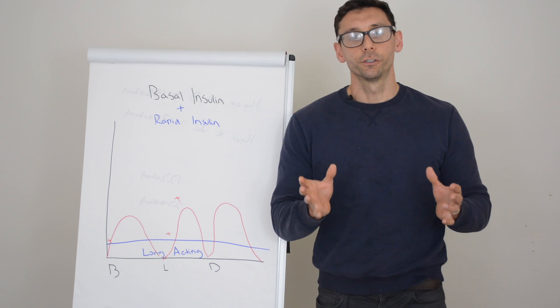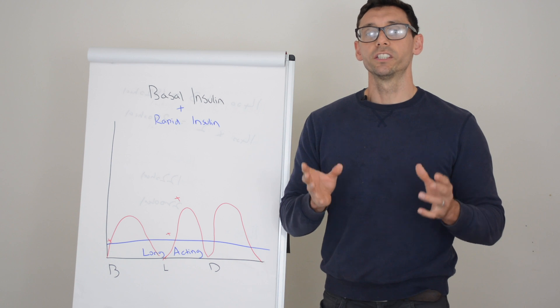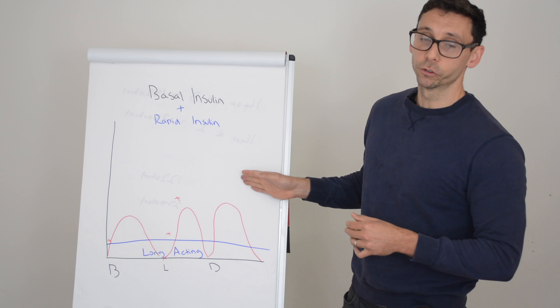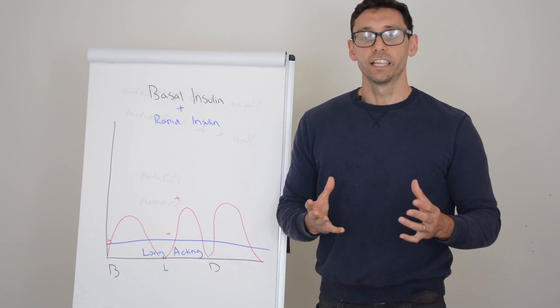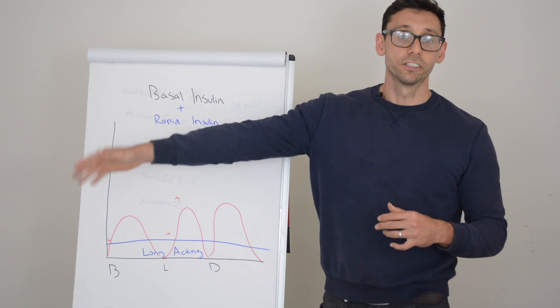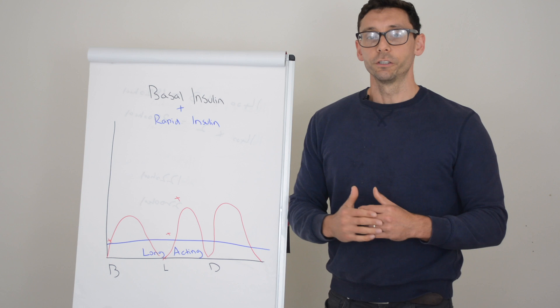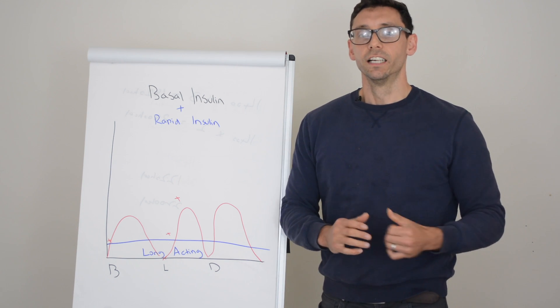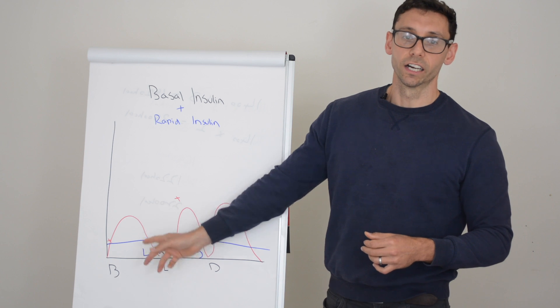The other thing you can use rapid acting insulin for is to help correct high glucose levels. Obviously if you're experiencing high glucose levels throughout the day, you don't want to stay there for the remainder of that day and into the next few days. What you can do is add additional insulin on top of your food insulin to help lower high glucose levels back into target.